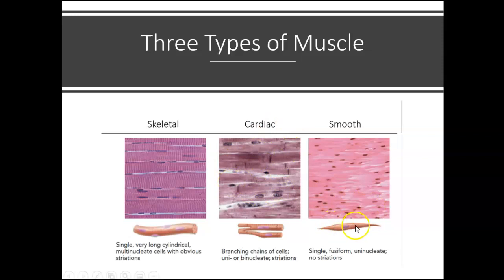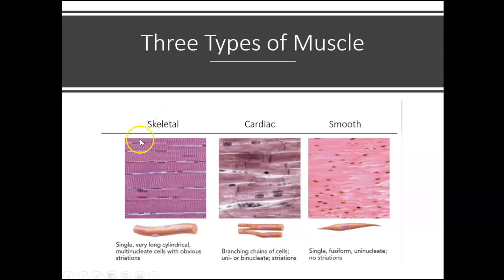Here is smooth muscle. It's going to have muscle cells or fibers that are spindle shaped. They're going to be uninucleated, and you won't find any striations on smooth muscle. Both cardiac and smooth muscle are involved with involuntary contractions or involuntary movement. Skeletal muscle, on the other hand, is involved with voluntary movement and, for the most part, voluntary action.